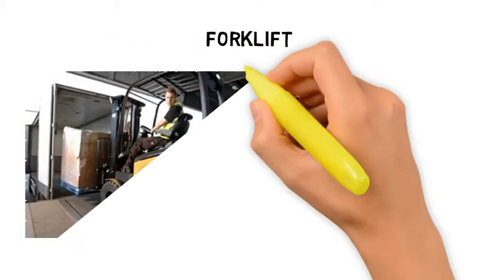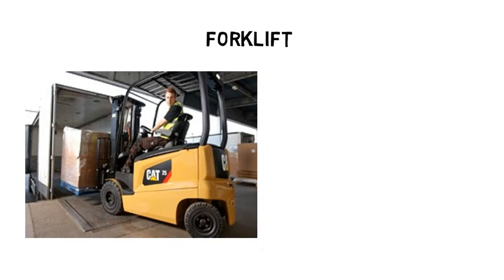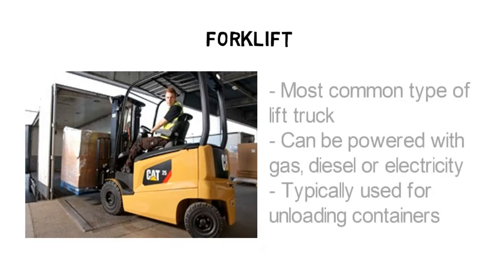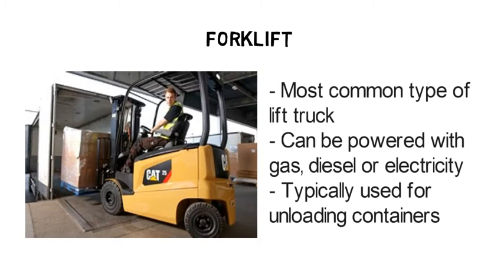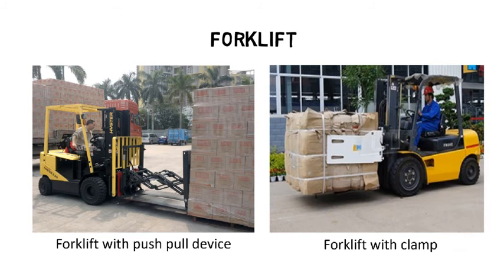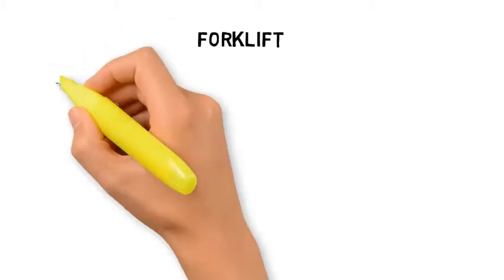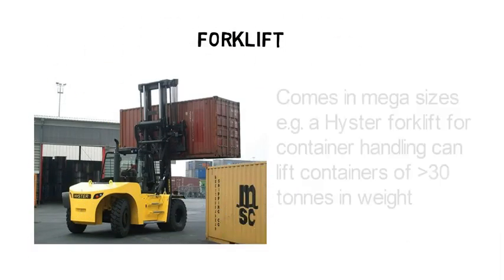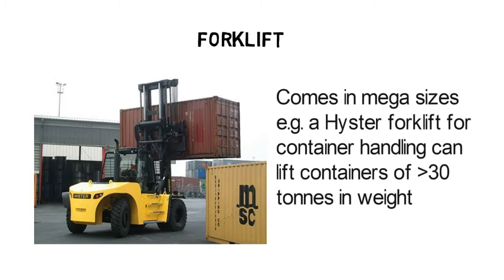The forklift is the most common type of lift truck. As the name implies, forks stick out from the front of the vehicle to engage a pallet. Forklifts can be powered with gas, diesel or electric batteries, with electric forklifts being the most commonly used in modern warehouses. They are typically used for loading and unloading shipping containers. Forklifts can be fitted with a push-pull device for handling non-palletised cargo or clamps for handling cargo that comes in bales. They also come in gigantic sizes — for example, the Hyster forklift used for container handling can lift containers of more than 30 tonnes.